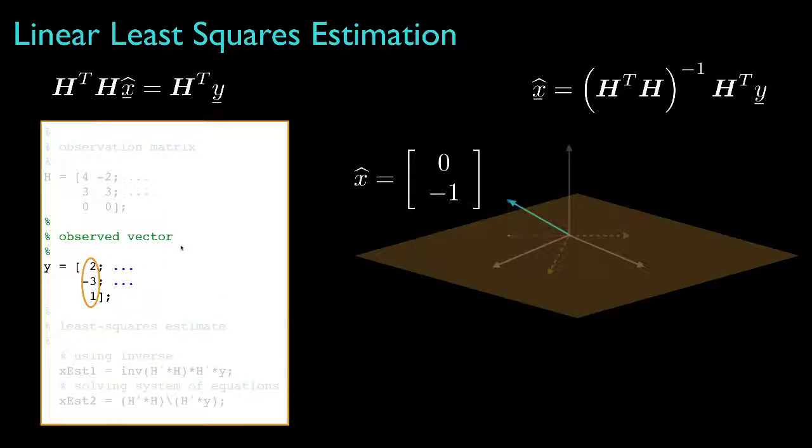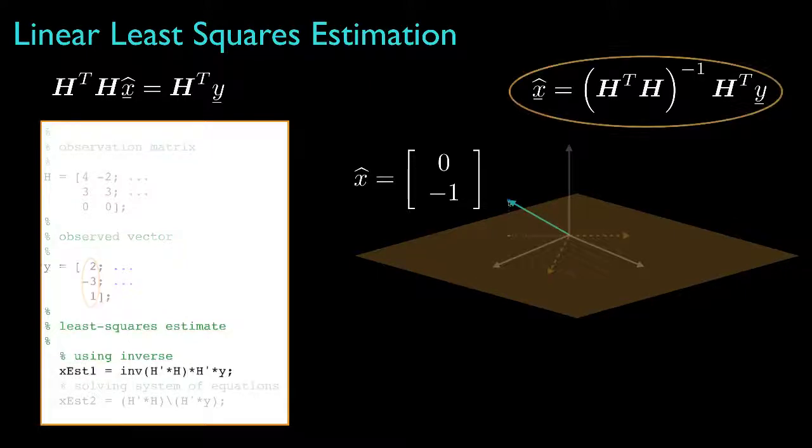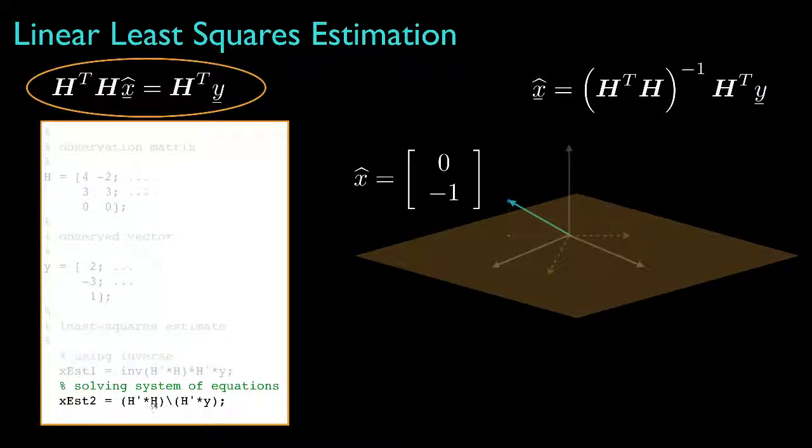Now the observed vector might be 2, negative 3, 1, which we've shown here. And then we can compute the solution using the matrix inverse, which would be the inverse of H transpose H times H transpose times y, or we can use MATLAB's backslash operator for solving the system of equations. Now either way, we'll produce the linear least squares estimate of 0, minus 1.